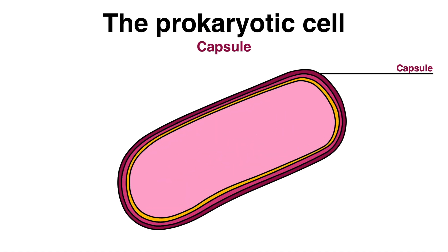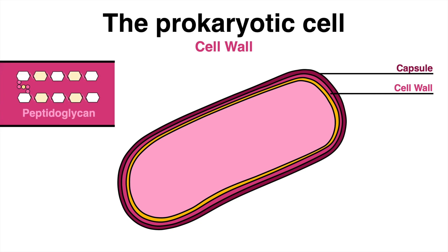Prokaryotes possess a cell wall surrounding the cell. The cell wall provides structural support and protection for the cell. The composition of the cell wall can vary between different types of prokaryotic cells, but it is typically made up of peptidoglycan, a complex polymer of sugars and amino acids.